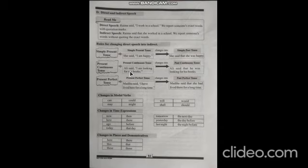Present continuous tense example: 'Ali said, I am looking for my books.' When this comes in indirect speech, it becomes: Ali said that he was looking for his books. The pronoun 'I' changes to 'he', and 'am looking' changes to 'was looking'.